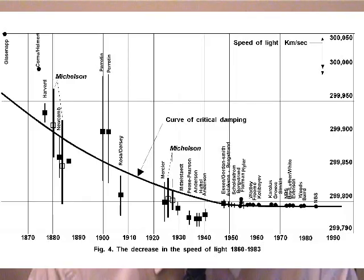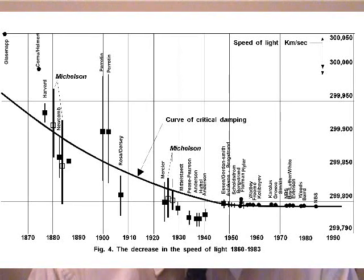Now, Barry Setterfield, who was in Australia at the time, collected a number of measurements of the speed of light over the last 300 years. And when you plot these on a graph, it shows quite clearly — very clearly indeed — that the speed of light has been decreasing over the years until it virtually flattened out in the 1960s.